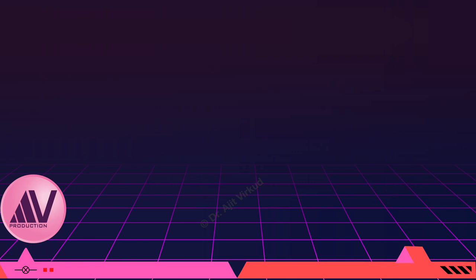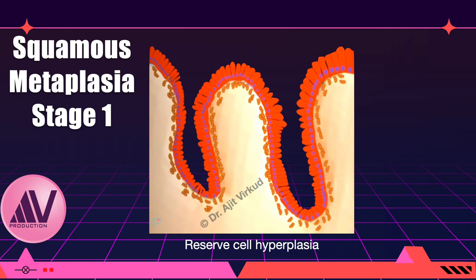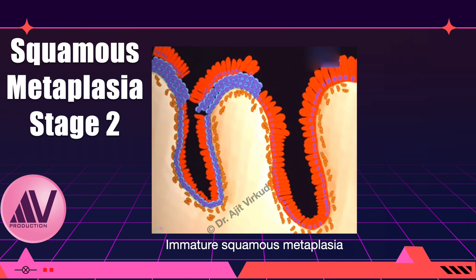The entire process of squamous metaplasia occurs in three stages. In the first stage, called reserve cell hyperplasia, the totipotential reserve cells start multiplying rapidly by mitosis. In the next stage, the multiplying reserve cells start to differentiate into squamous cells but the conversion is still incomplete. In some areas only the basal and parabasal cells have formed, and in other areas development occurs up to the intermediate cell layer, but the superficial cell layer is not formed. Hence, it is called the immature squamous metaplasia stage.